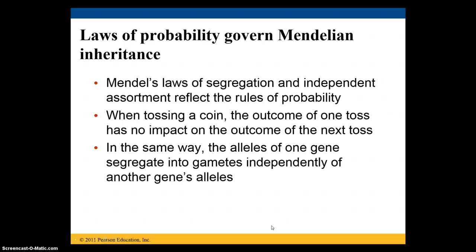We can use the laws of probability to predict Mendelian inheritance. Mendel's laws of segregation and independent assortment reflect the rules of probability. For example, when you toss a coin, the outcome of one toss has no impact on the outcome of the next toss. Every single toss is an independent event. In the same way, the alleles of one gene segregate into gametes independently of another gene's alleles.